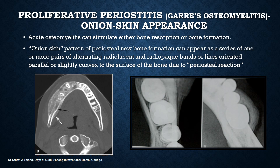Proliferative periostitis, also referred to as Garré's osteomyelitis, has an onion skin-like appearance. This is acute osteomyelitis that can stimulate either bone resorption or bone formation. The onion skin pattern of periosteal new bone formation appears as a series of alternating radiolucent and radiopaque bands or lines oriented parallel or slightly convex to the bone surface due to a periosteal reaction. You can see layers of radiolucency and radiopacity on both the CT image and the plain radiographic image, resembling an onion skin. This is generally seen in younger individuals.